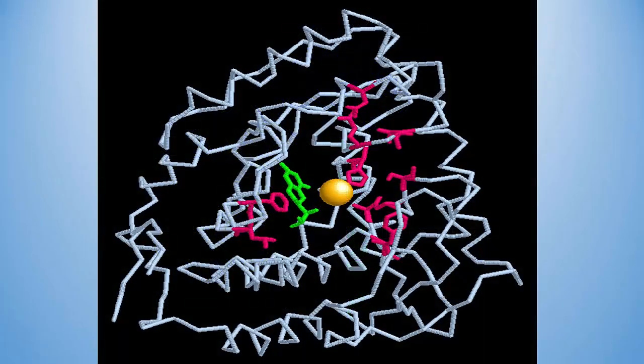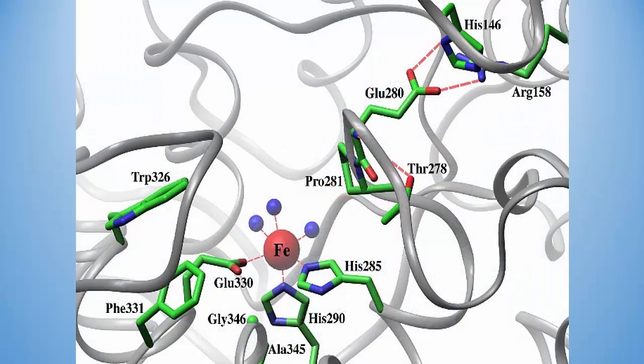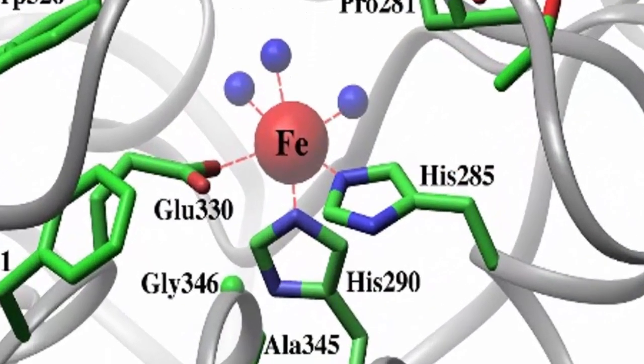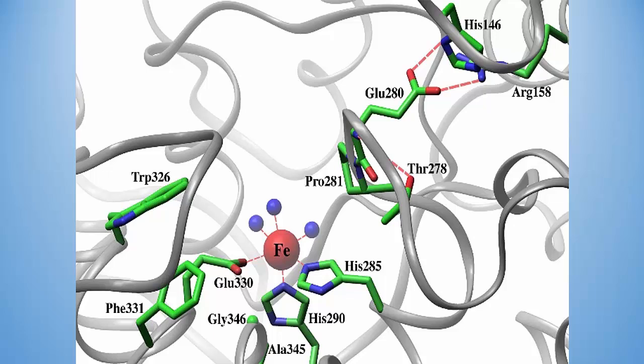Looking closely at the active site, the iron atom shown in orange is the main focal point. The molecule shown in green is the BH4 molecule, and the molecules in red are important residues in the active site. The iron atom interacts directly with glutamate-330, histidine-290, and histidine-285, with other residues responsible for interacting with the substrates phenylalanine and BH4. The blue dots in this diagram are water molecules complexed to the iron atom, which occurs when BH4 and phenylalanine are not in the active site.